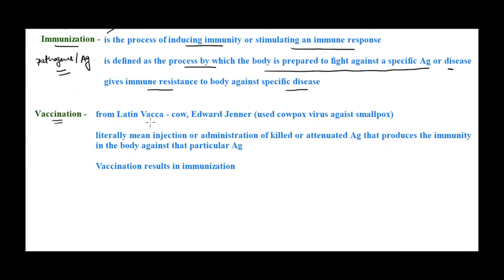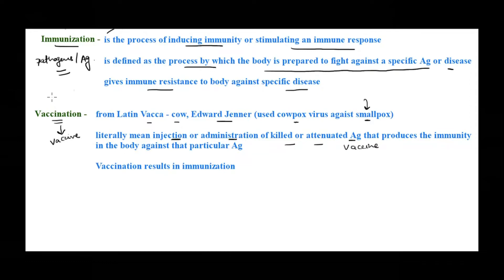Vaccination comes from the Latin word 'vaca' meaning cow, where Edward Jenner first gave immune resistance against smallpox by using cowpox. He gave the cowpox virus to an individual, which gave immune resistance against the smallpox virus. So vaccination is where you administer a vaccine into an individual — literally just injecting or administering a killed or attenuated antigen which gives immunity to a person.